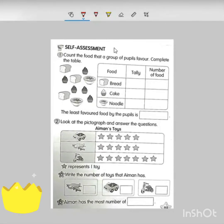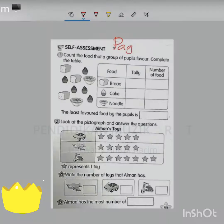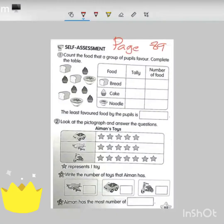Now we continue our lesson on the next page. This one is page 89. Still remember the tally exercise. Now we want to do the tally. Count the food that a group of people favor. Complete the table. The first food is bread. Count how many bread here. One, two, three. So do the tally. One, two, three. Number is three.